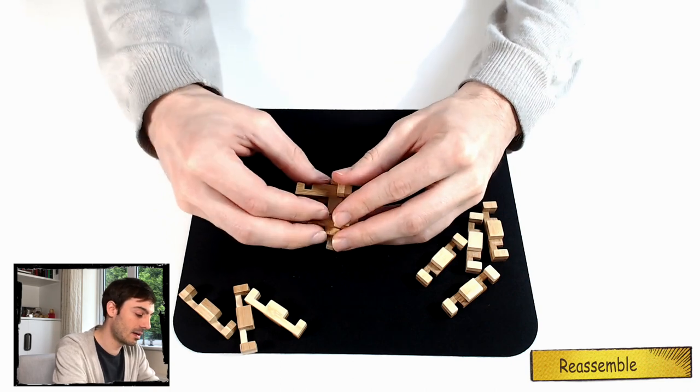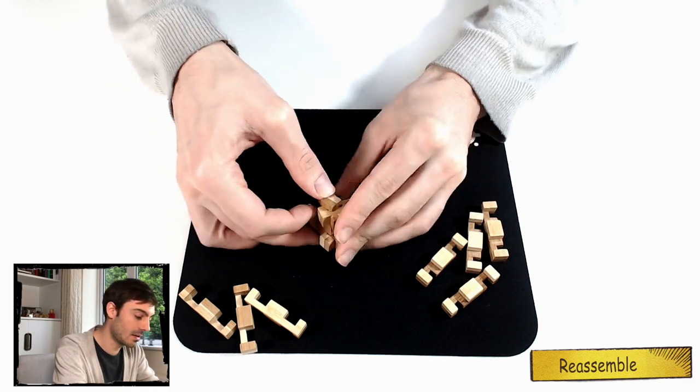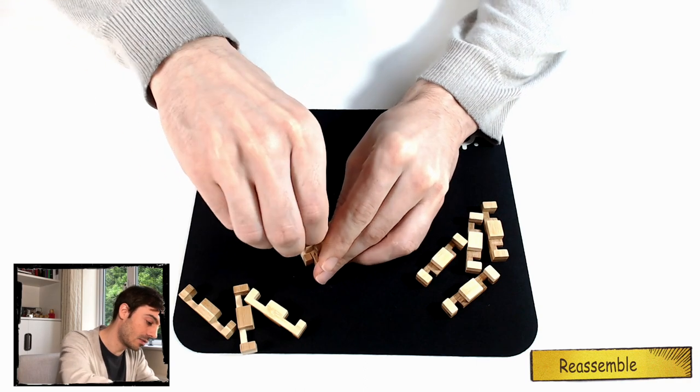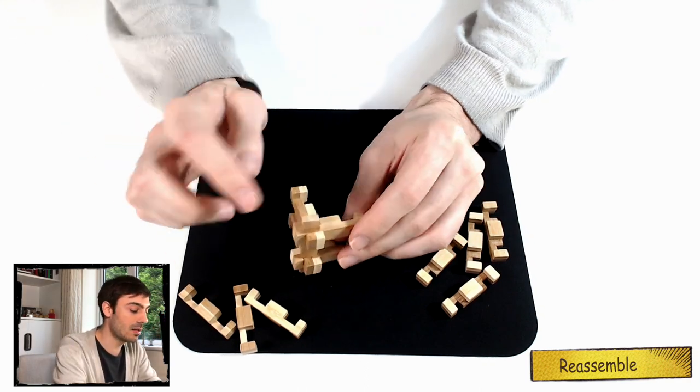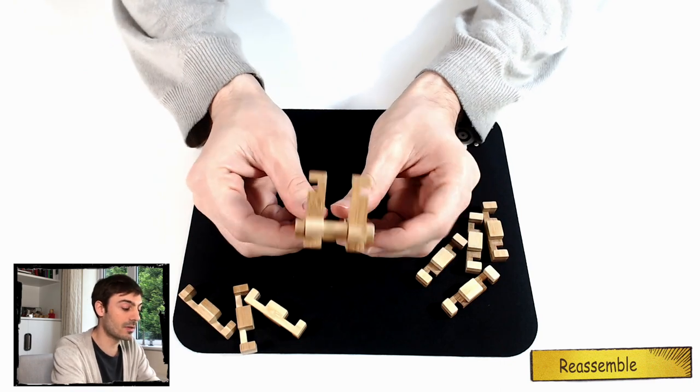Now that we have our two sides here, we can rotate this one. And we have two corners. That's very nice. This puzzle is really smart.